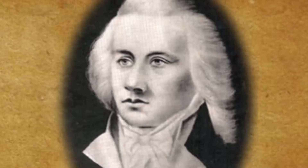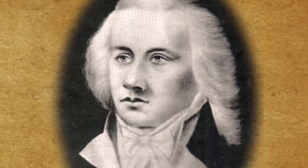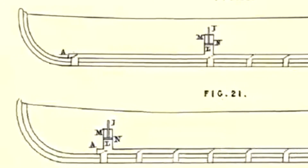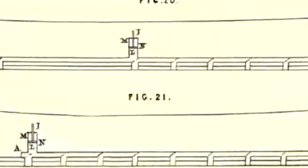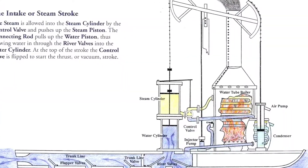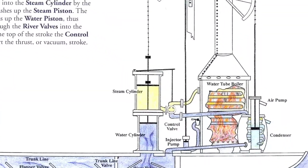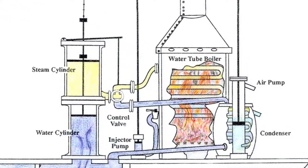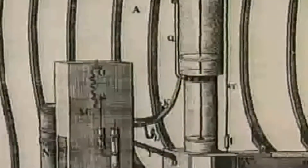James Rumsey Boiler, 1788: The first functional water tube boiler was created by mechanical engineer James Rumsey from the United States. He patented several water tube boiler designs, earning him the title of inventor of the water tube boiler. One of his most famous designs is a steam-powered boat designed to cross the Potomac River, equipped with a water tube boiler whose tubes are twisted horizontally inside a large furnace.